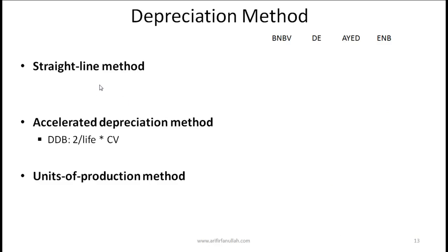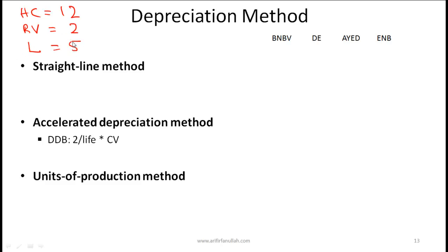You need to be familiar with three depreciation methods: the straight-line method, accelerated depreciation, and the units of production method. Let's understand these by taking a simple example. Say the total gross investment on a machine is 12 million, the residual value — how much you'll sell it for — is 2 million, and the expected useful life is five years. So you buy and set it up for 12 million, use it for five years, then dispose of it for 2 million.